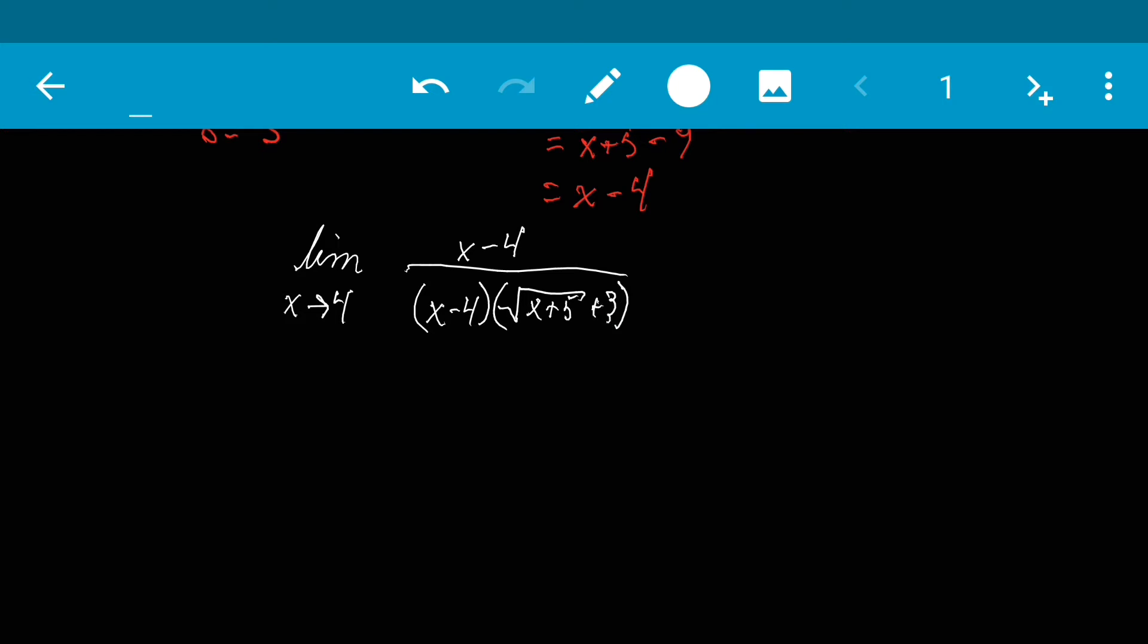So now at this point we see that we have x minus 4 in the numerator and the denominator. So those can cancel out, which now gives us the limit as x approaches 4 of 1 over the square root of x plus 5 plus 3.